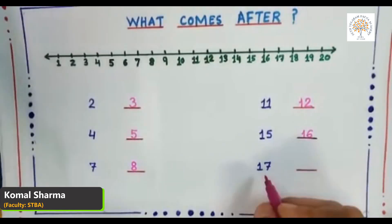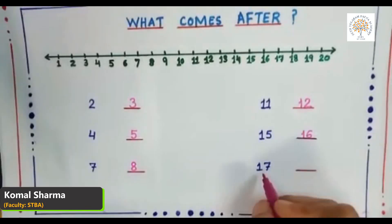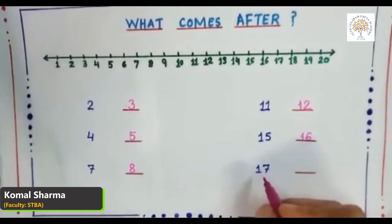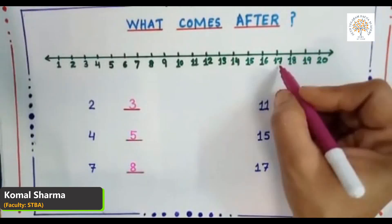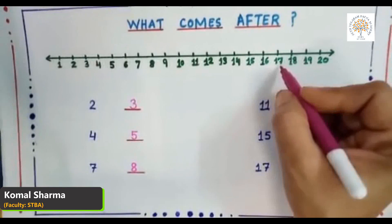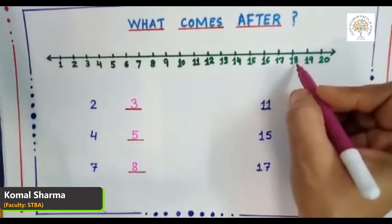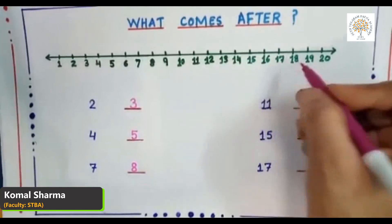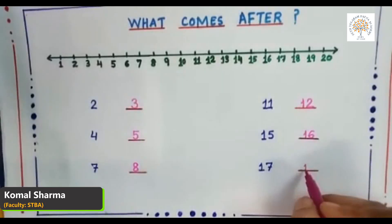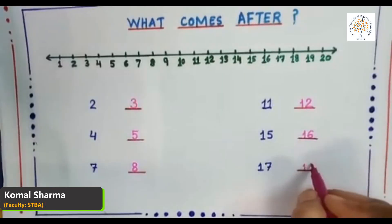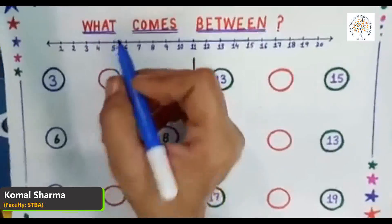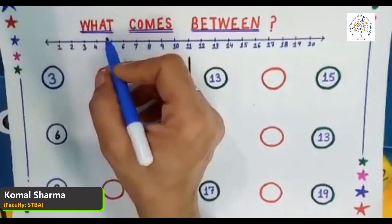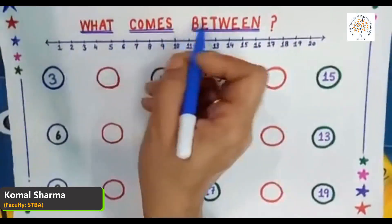Now tell me what comes after number seventeen. Again, look at the number line — here is number seventeen, and what comes after number seventeen? Yes, it is number eighteen. Now we will revise 'what comes between.'